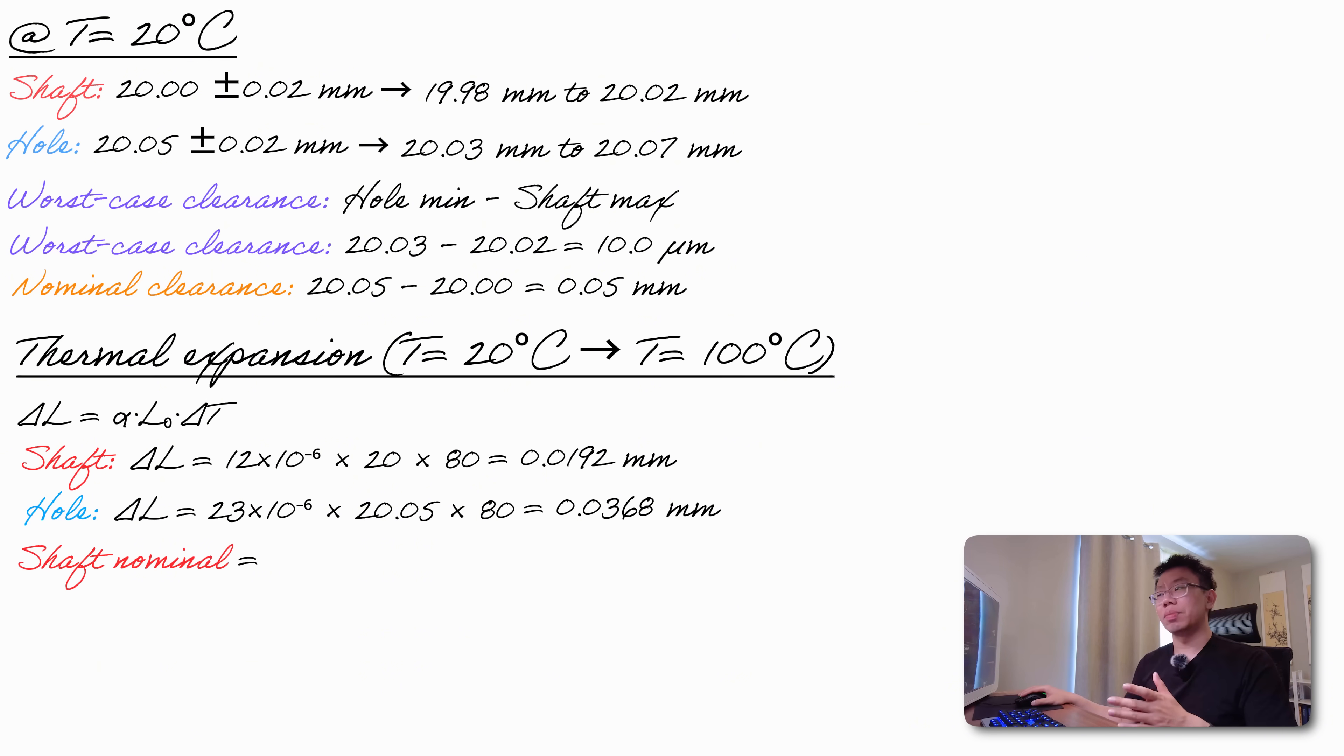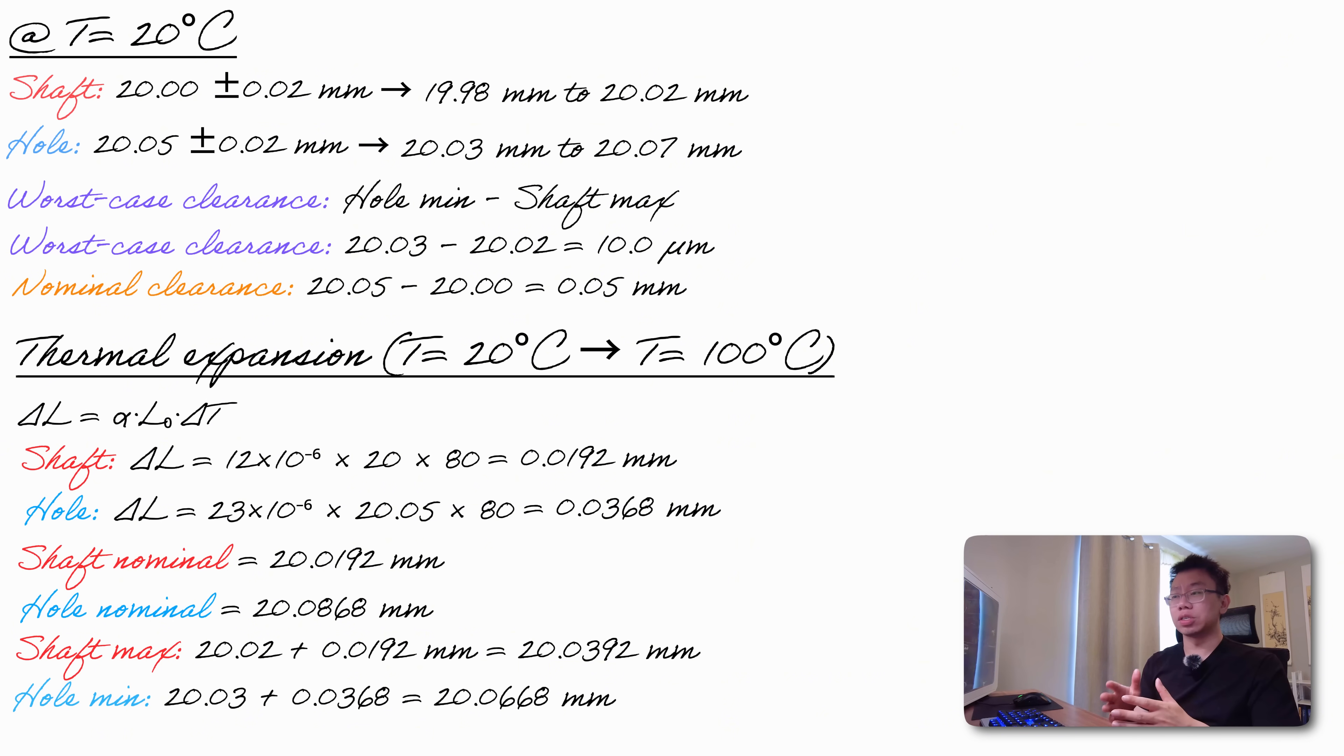So at 100 degrees Celsius, the shaft nominal diameter is 20.019 millimeters, and the hole nominal diameter is 20.087 millimeters. For worst case conditions, the shaft maximum is 20.02 plus .0192, which is 20.039 millimeters. The hole minimum is 20.03 plus .0368, which is 20.067 millimeters. The clearance is 20.067 minus 20.039, which equals 0.028 millimeters or roughly 28 microns. So the clearance increases from 10 microns at room temperature to approximately 28 microns at operating temperature.